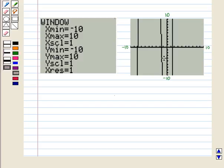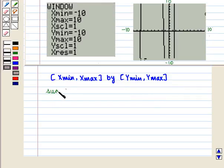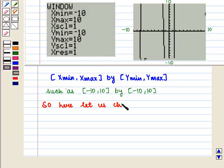When writing our window information on paper we indicate the viewing window by stating closed interval from Xmin to Xmax by closed interval from Ymin to Ymax. So here let us choose the window. That is closed interval from minus 9 to 3 by closed interval from minus 100 to 300.